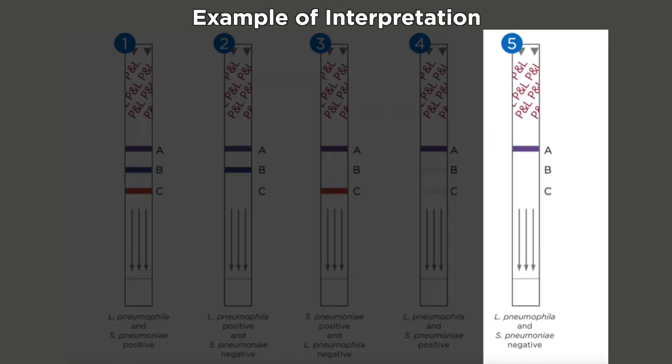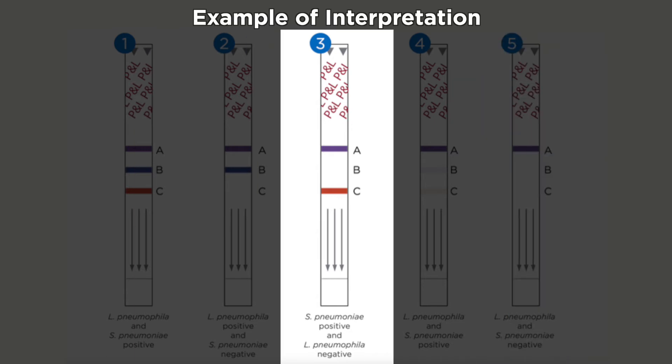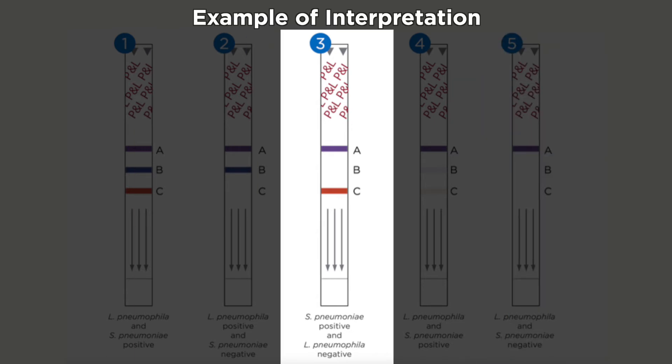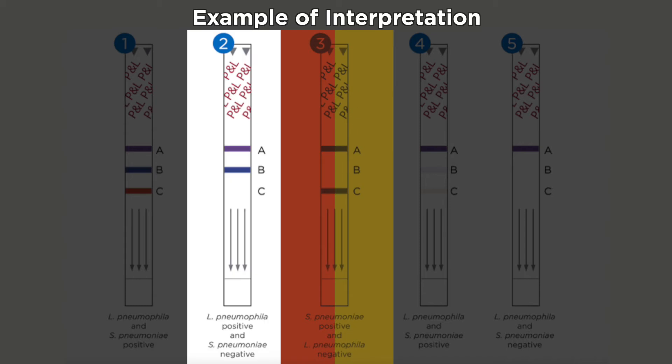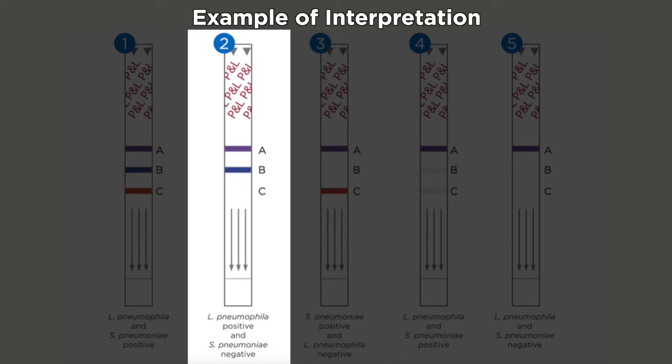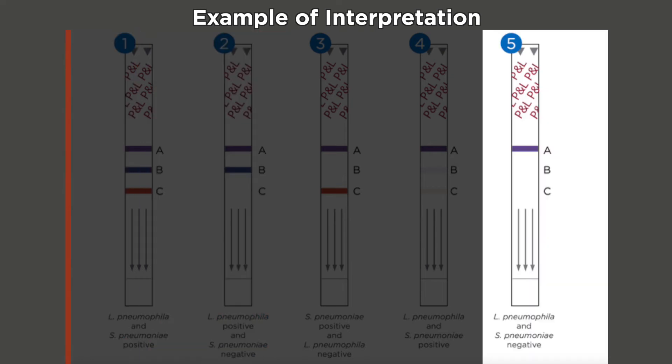First, ensure the test is valid by determining whether there is a control line. A positive S. pneumoniae test has a control line and a red line. A positive Legionella test has a control line and a blue line. A negative test will only have the control line.